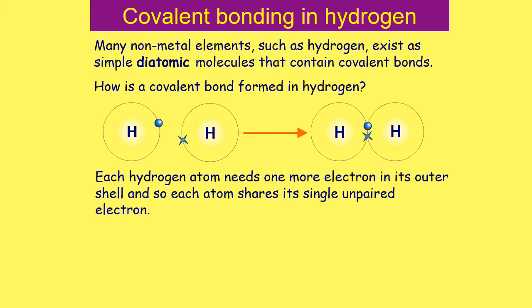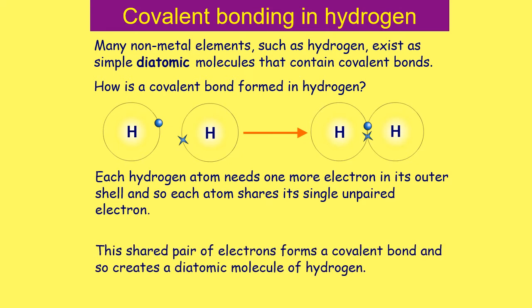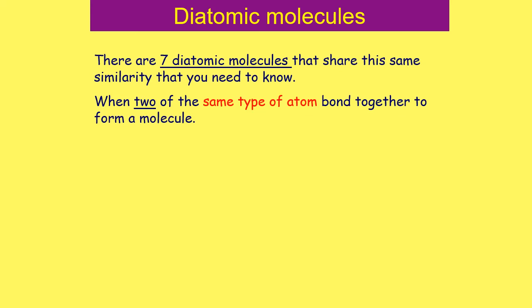By sharing electrons, they form a covalent bond. As a result, each hydrogen now has two electrons in its outer shell. This shared pair of electrons forms a covalent bond and creates a diatomic molecule of hydrogen, H₂.